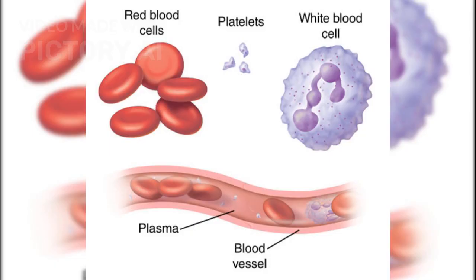Blood is composed of two main components: plasma. Plasma is a pale, yellowish, or straw-colored liquid. Plasma consists of RBCs, WBCs, and platelets.